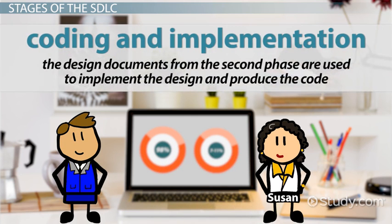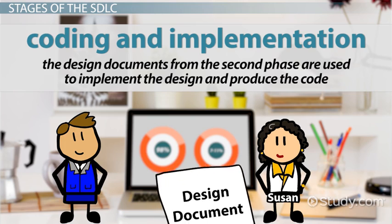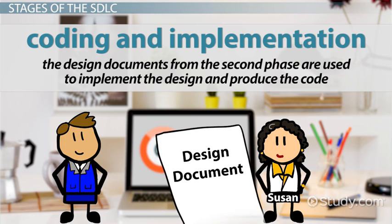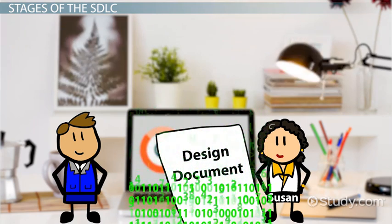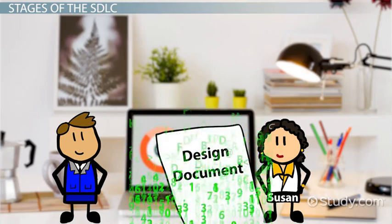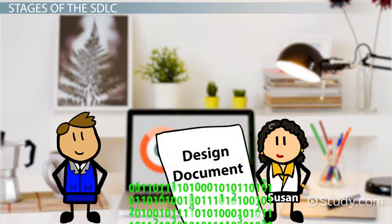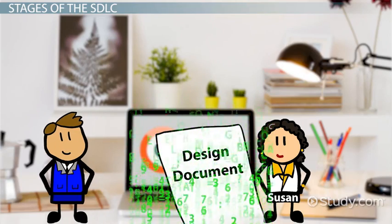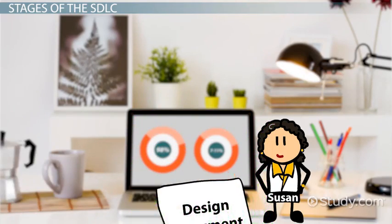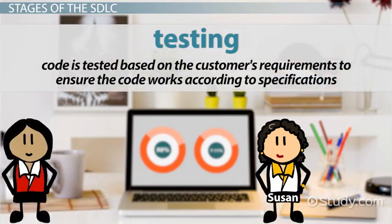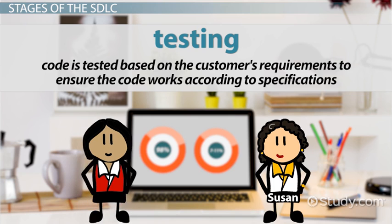The third stage is Coding and Implementation, which is when the design documents from the second phase are used to implement the design and produce the code. The code development is the longest part of the SDLC process. After the code is developed, the fourth stage, Testing, can begin.